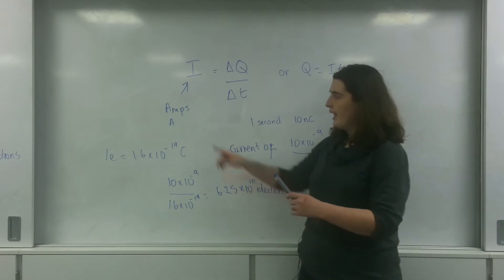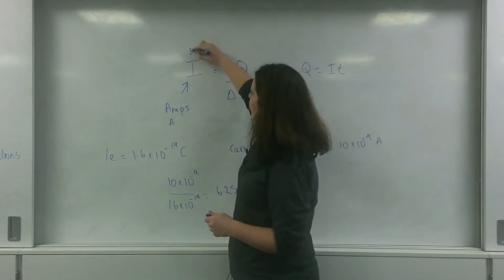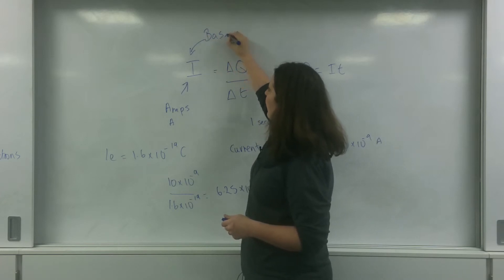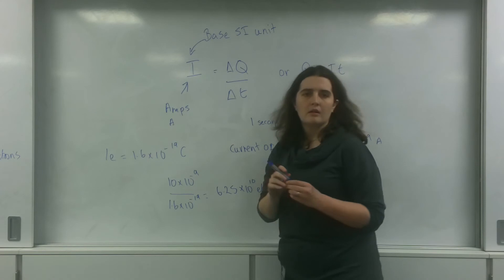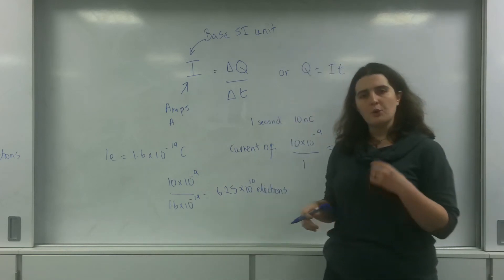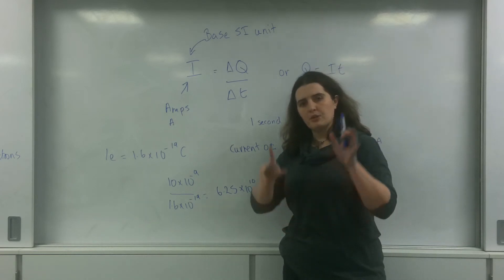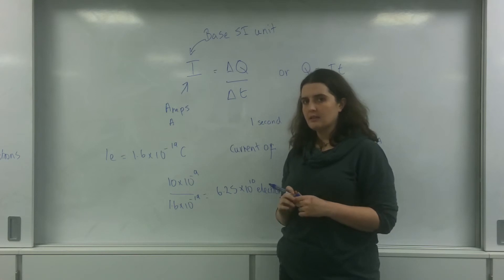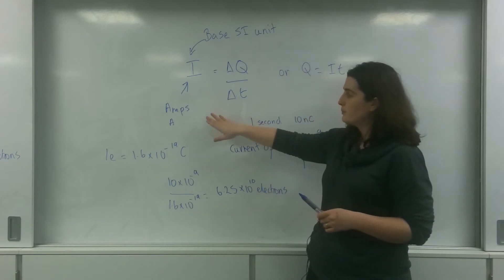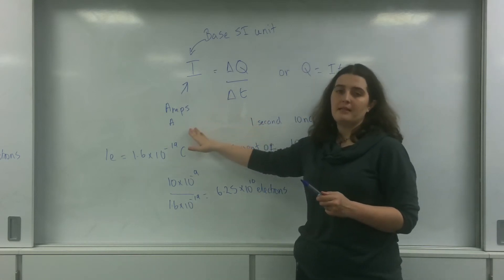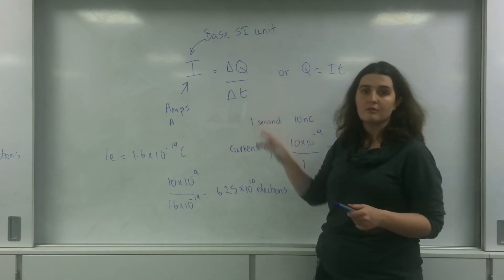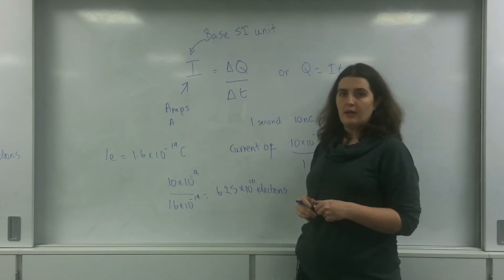It's important to note that amps here is what we call a base SI unit. A base SI unit is one of the 7 SI units that you need to use. So amps here is the base SI, not coulombs.